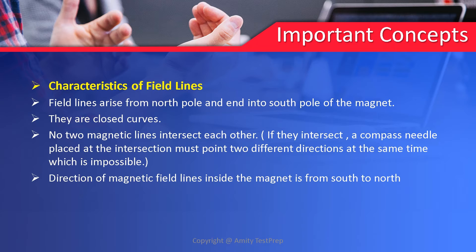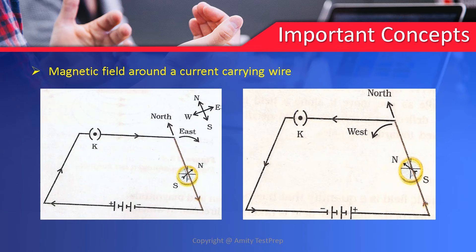The next characteristic is the direction of magnetic field lines inside the magnet is from south to north. One more characteristic is that magnetic field lines represent a vector quantity. Characteristics of magnetic field lines is an important topic — a one-marker or two-marker question can be asked from this topic.